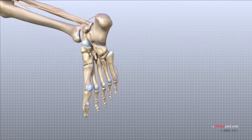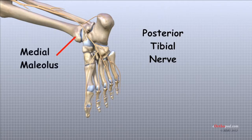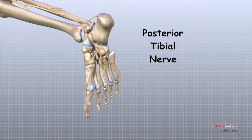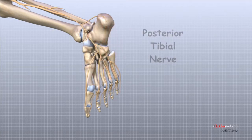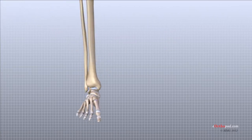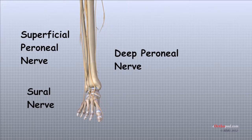The main nerve to the foot, the tibial nerve, enters the sole of the foot by running behind the inside bump on the ankle, or the medial malleolus. This nerve supplies sensation to the toes and sole of the foot and controls the muscles of the sole of the foot. Several other nerves run into the foot on the outside and down the top of the foot, primarily providing sensation to different areas on the top and outside edge of the foot.